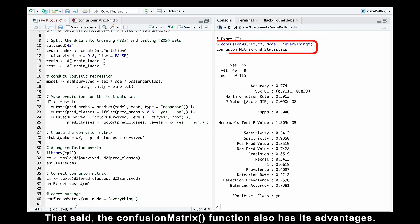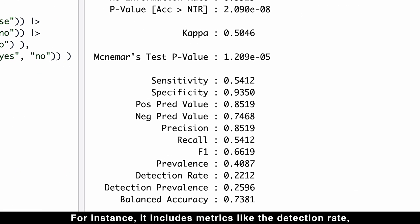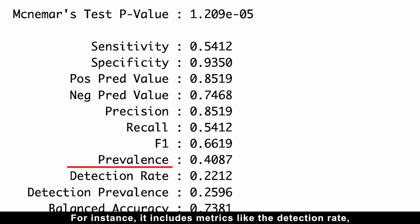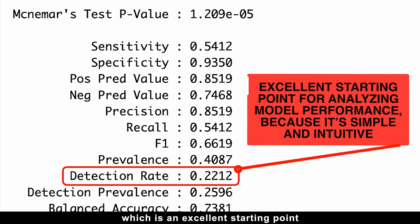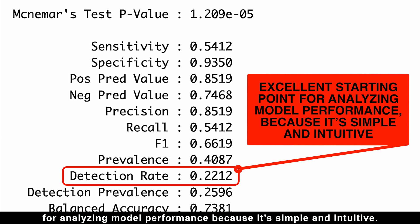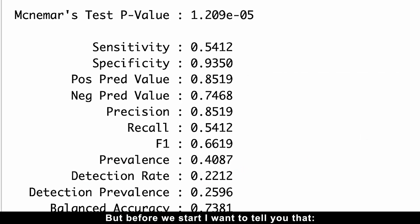That said, the confusion matrix function also has advantages. For instance, it includes metrics like the detection rate, which is an excellent starting point for analyzing model performance because it's simple and intuitive. But before we start, I want to tell you that this video is brought to you by Stock Unlock.